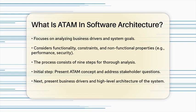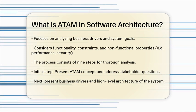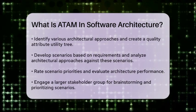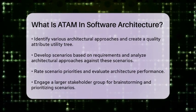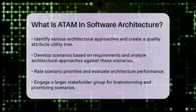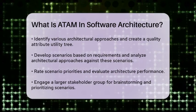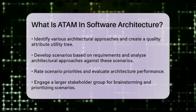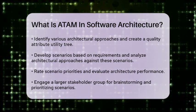Here's where it gets interesting. You create scenarios based on these requirements and analyze each architectural approach against these scenarios. This helps you rate the priority of each scenario and evaluate the architecture's performance against them. You repeat this process, brainstorming and prioritizing scenarios with a larger stakeholder group, until you have a comprehensive analysis. The final steps involve presenting the results to all stakeholders, including the identified risks, sensitivity points, and tradeoffs. This documentation serves as a basis for architectural decisions and helps in improving architecture documentation.